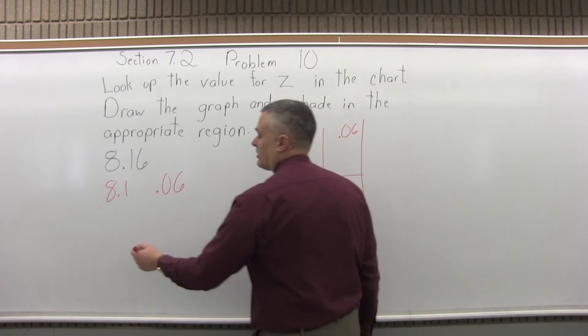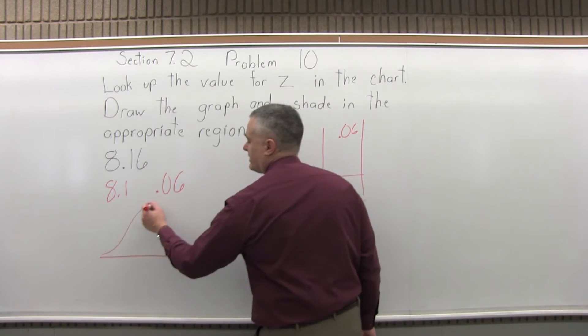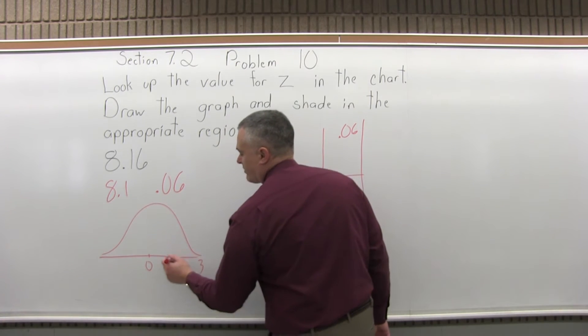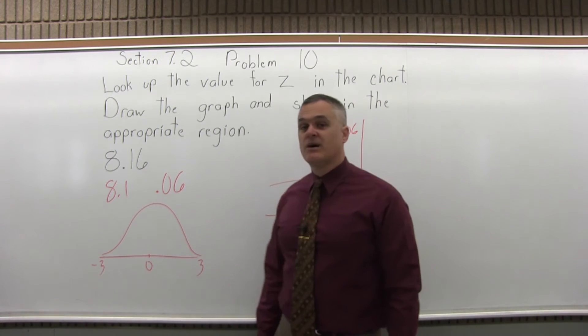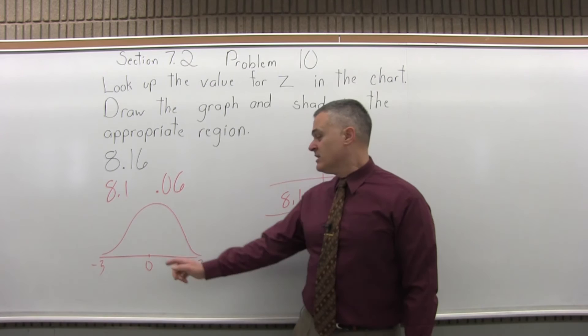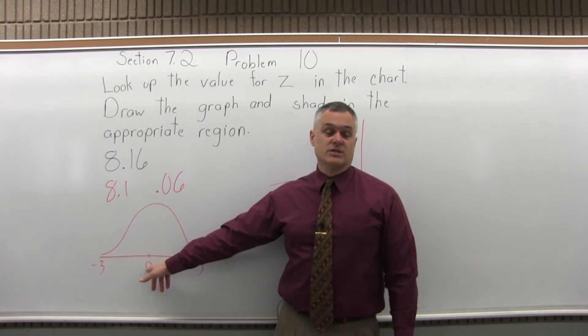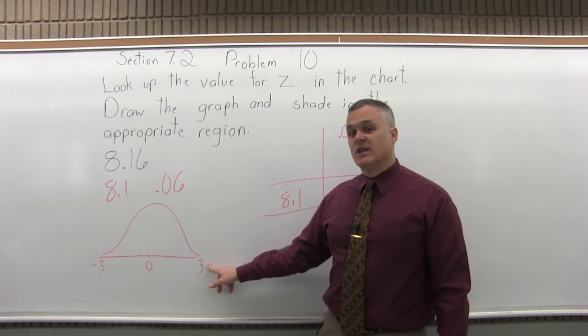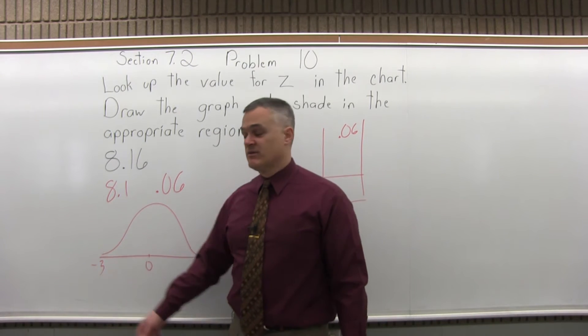If you look at the bell curve, the way we draw this is we put a 0 in the center, a 3 on the right end, and a negative 3 on the left end, and these numbers represent how many standard deviations you are away from the average value. The 0 in the middle meaning 0 standard deviations away from the average. The 3 means 3 standard deviations larger than the average value. The negative 3, 3 standard deviations less than the average value.